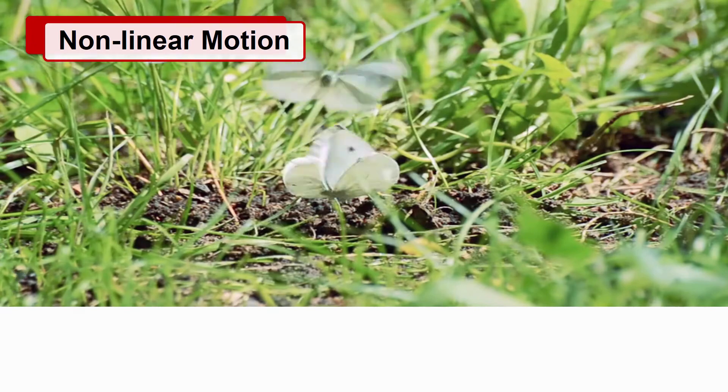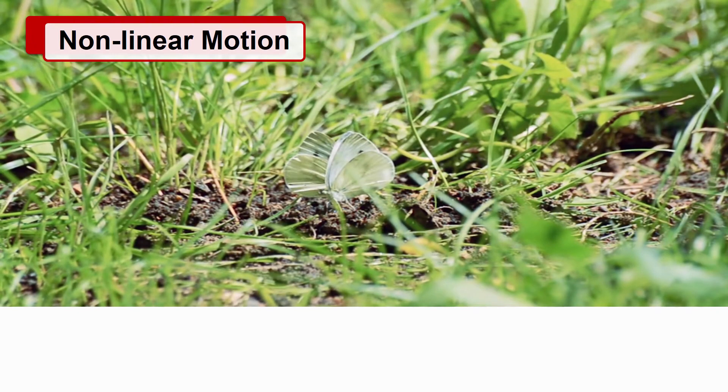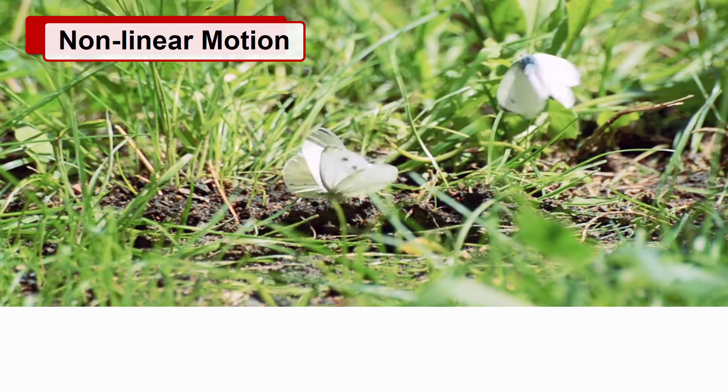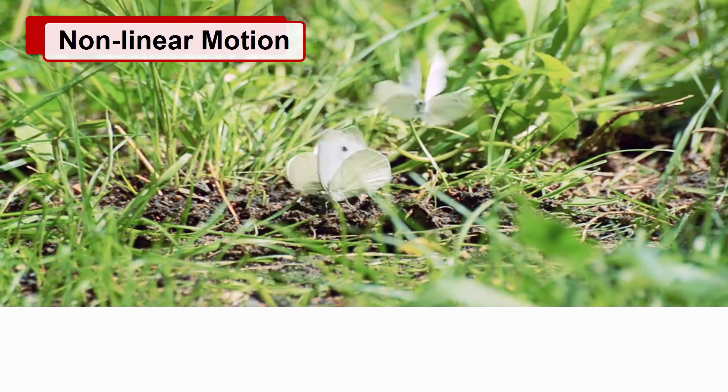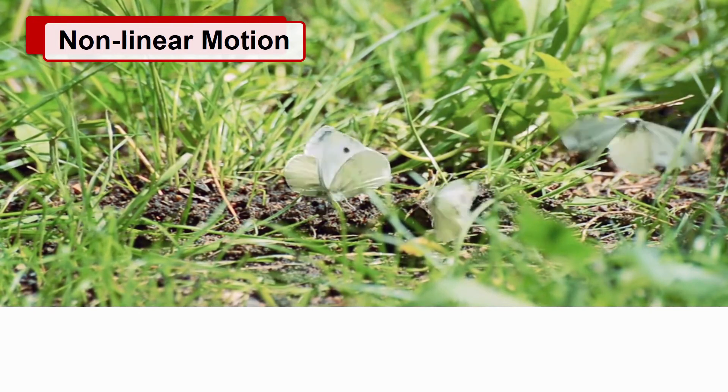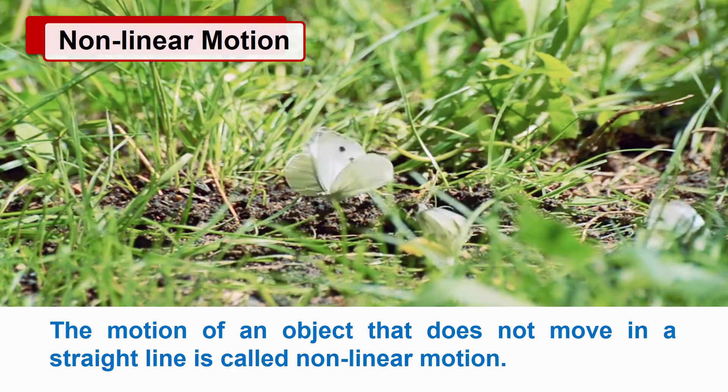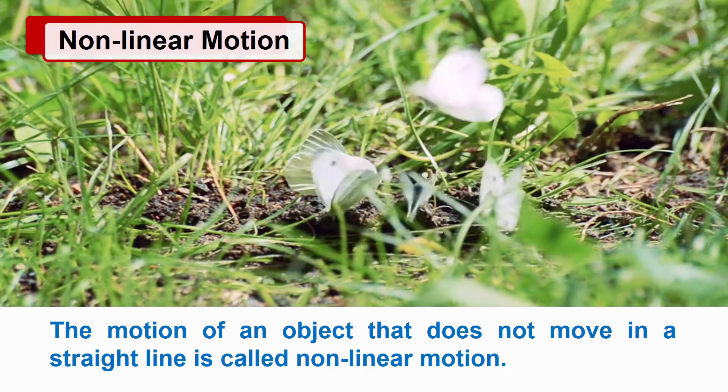Non-linear Motion. Friends, we all have seen the movement of the butterfly in the garden. It does not follow a definite path or straight path. So we can say this motion of the butterfly is non-linear. The motion of an object that does not move in a straight line is called non-linear motion.